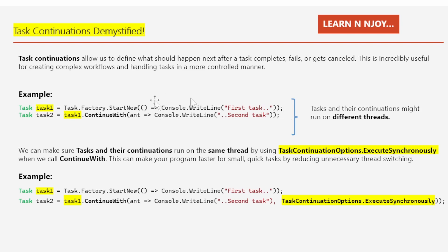If you write code this way, the task and their continuation might run on different threads. To make sure that a task and its continuation run on the same thread, the solution is to use TaskContinuationOptions.ExecuteSynchronously when calling ContinueWith. This can make our program faster for small, quick tasks by reducing unnecessary thread switching.